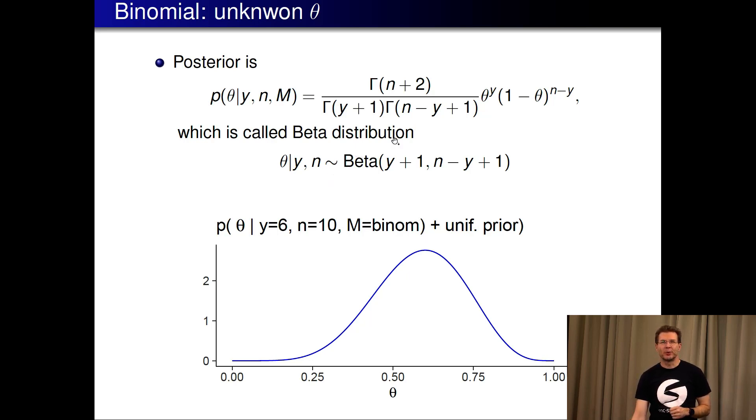Here it's known as a beta distribution. Many software has built-in functions to compute this beta density. You would need to know that if you use uniform prior, in order to get this beta density, you will put in there number of red chips plus one and number of yellow chips plus one, and then you get the posterior distribution.